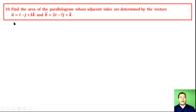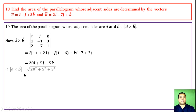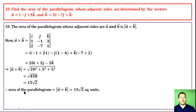Question 10: Find the area of the parallelogram whose adjacent sides are represented by the given vectors a and b. The area of a parallelogram with adjacent sides vector a and vector b is the magnitude of a cross b. Compute a cross b by expanding the determinant, then find its magnitude. Simplifying gives 15√2. Therefore the area of the parallelogram is 15√2 square units.